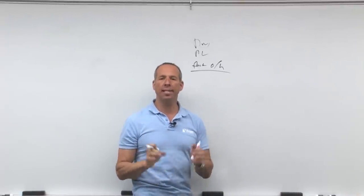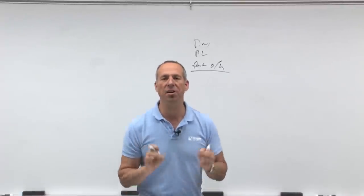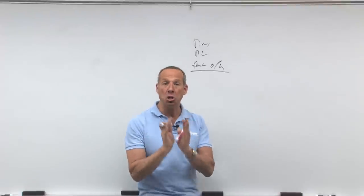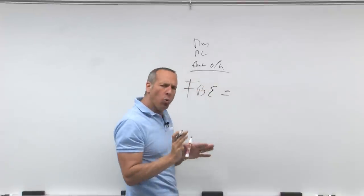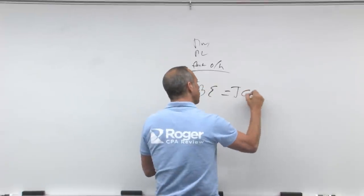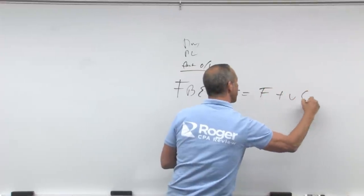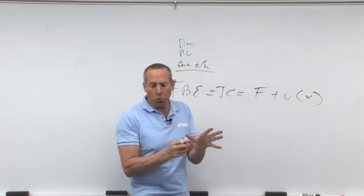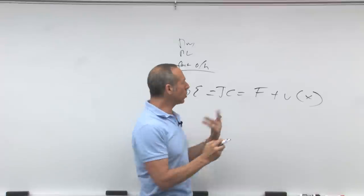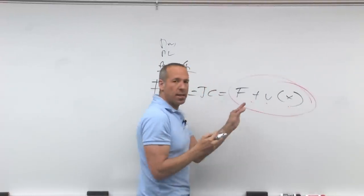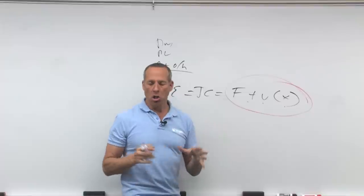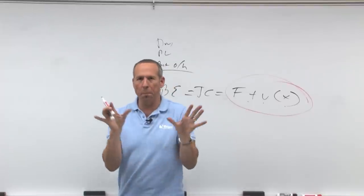Something that's important to understand is all of your overhead variance analysis is done using the flexible budget equation. What was the flexible budget equation? Total cost equals fixed plus variable times X. So as we go through, we're going to be looking at fixed plus variable times X, where X is going to be changing as we go across. It's important to kind of start out with a big picture.